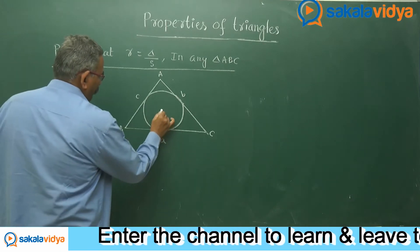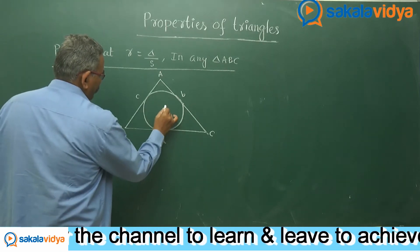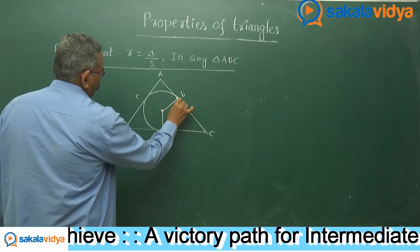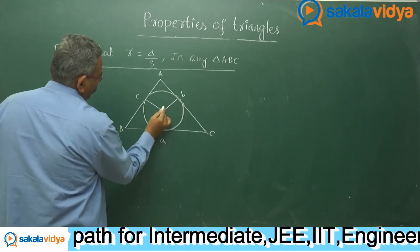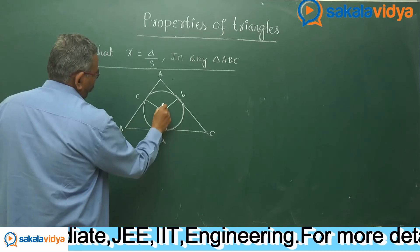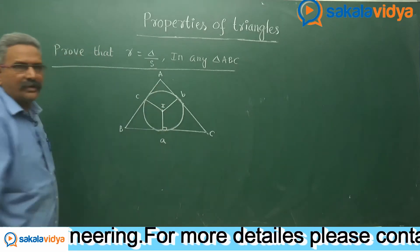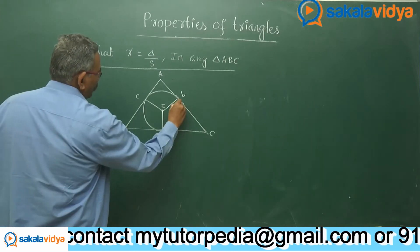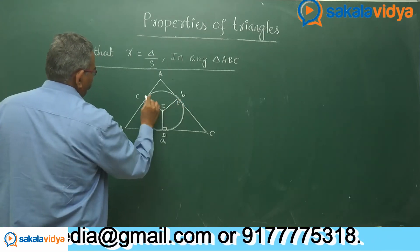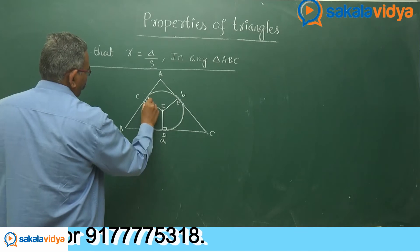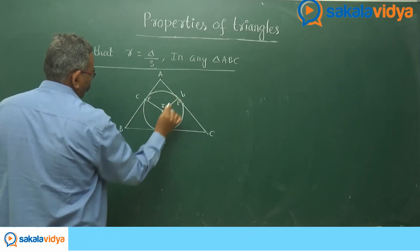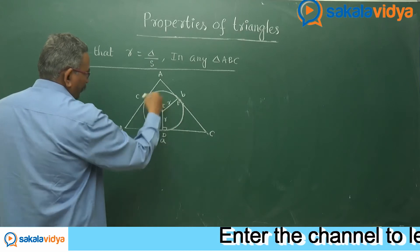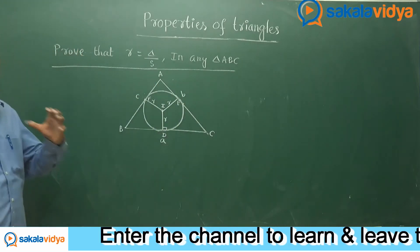Now let us say I is the incenter. We draw perpendiculars from I to each side. Call the feet of these perpendiculars D, E, and F. The distances ID, IE, and IF are each equal to small r, the inradius of the incircle.